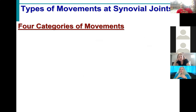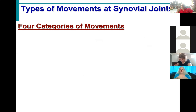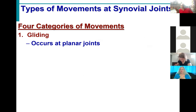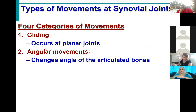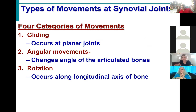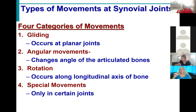The last major thing we need to talk about for the movements of the joints is actually to talk about the movements themselves. Now that we know how a joint is going to work, we need to talk about the movements they're going to allow and make sure we're using the appropriate anatomical terminology. There are four main categories of movement types: gliding movements, angular movements, rotations, and special movements.